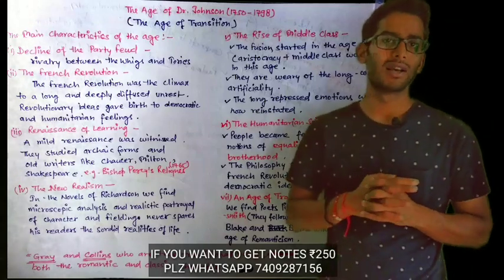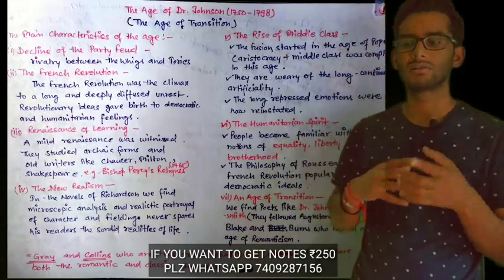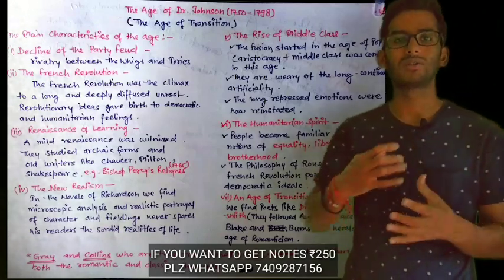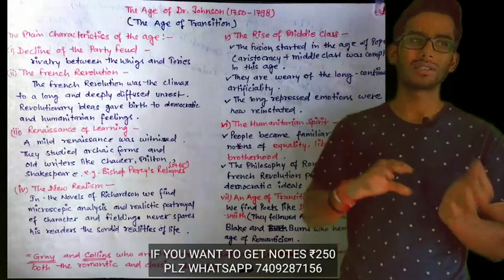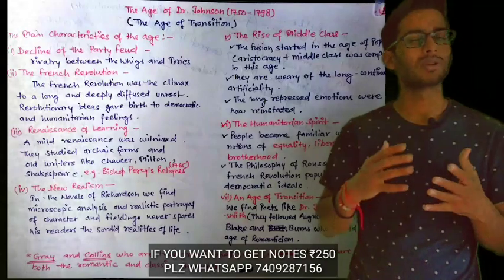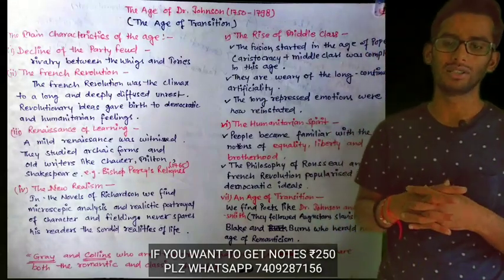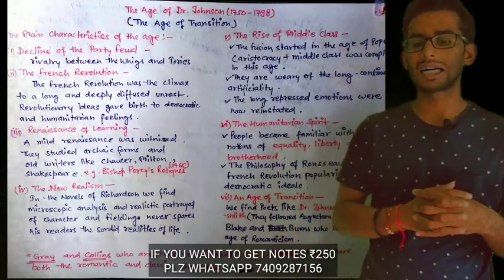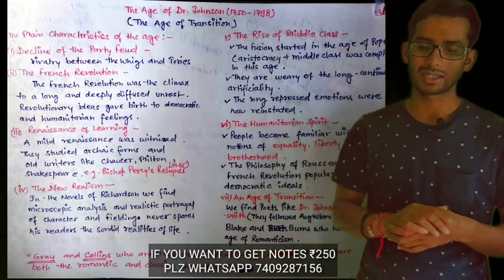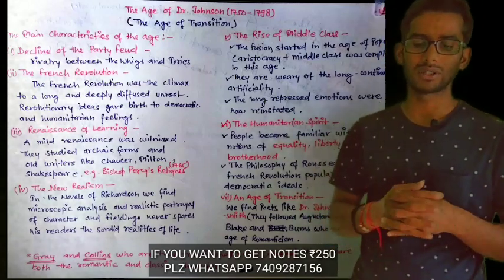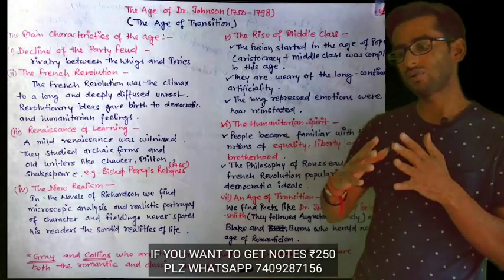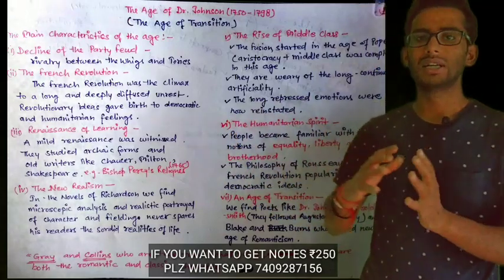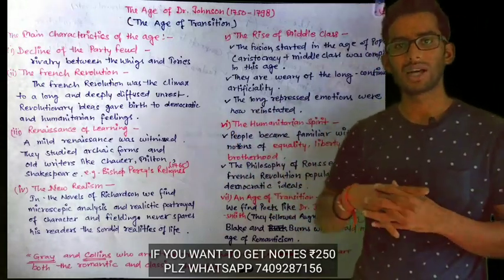The 18th century is also called the Age of Classics because writers followed rules and studied archaic forms, which they later reproduced in their own works. The fourth characteristic is the New Realism. In the novels of Richardson we find microscopic analysis and realistic portrayal of character, and Fielding never spared his readers the sordid realities of life — they incorporated real things into their works.